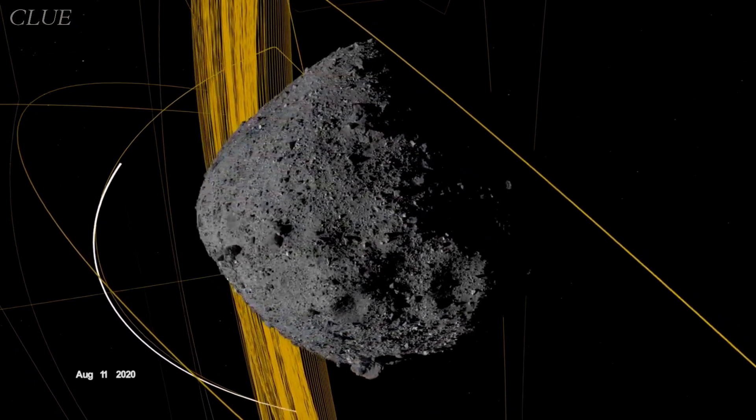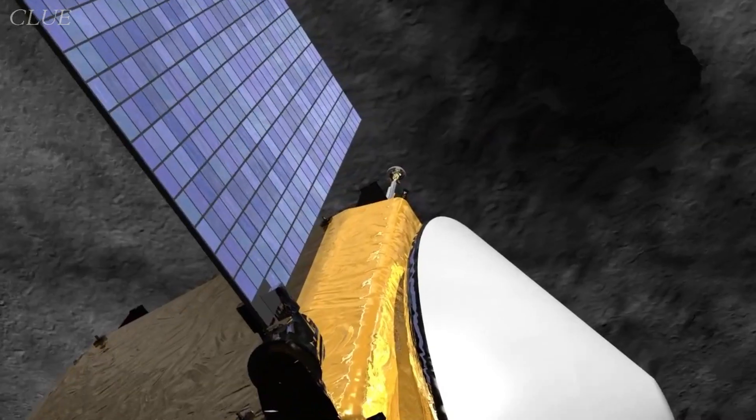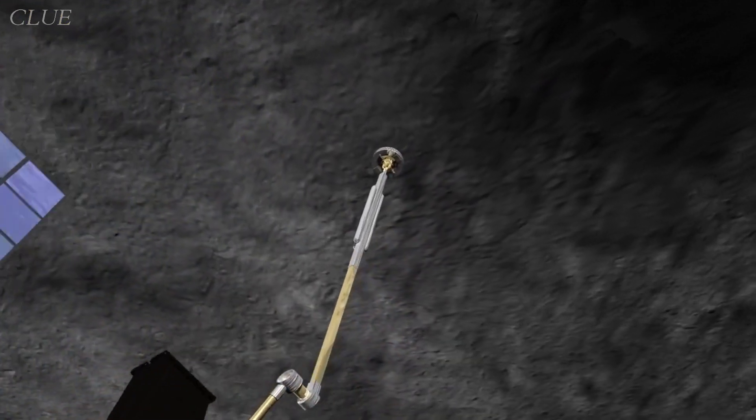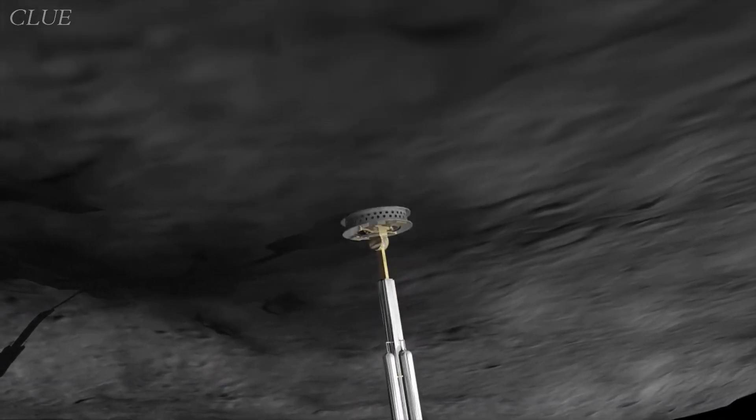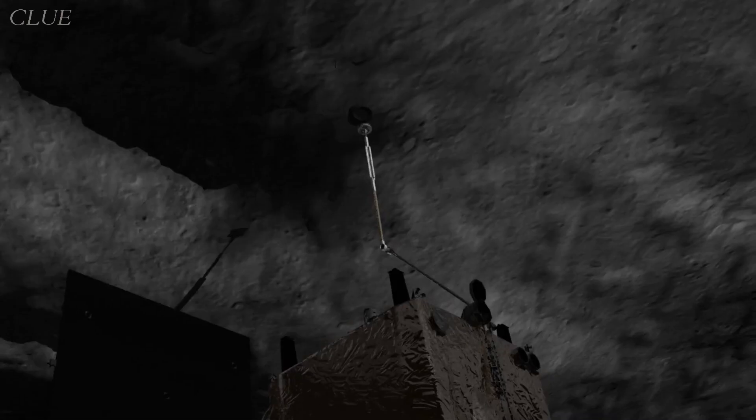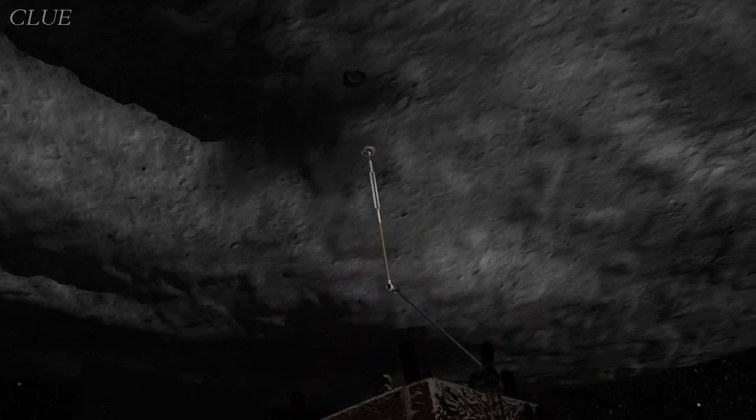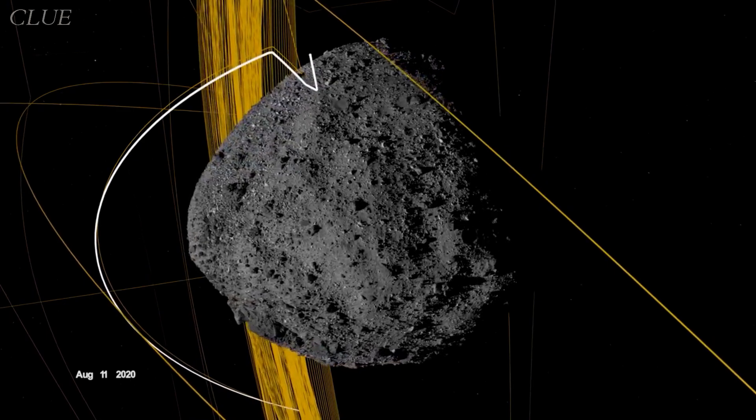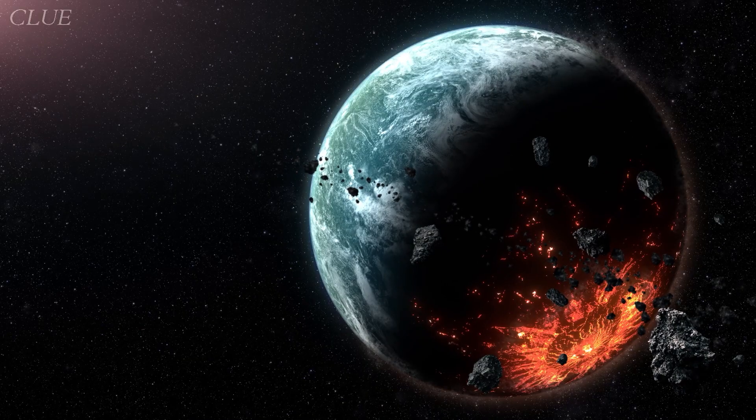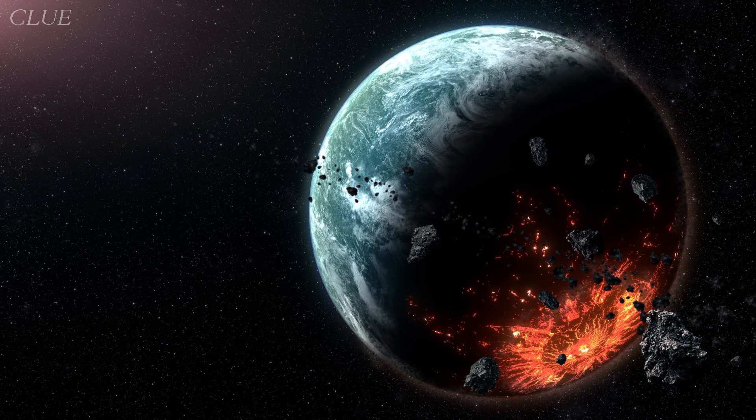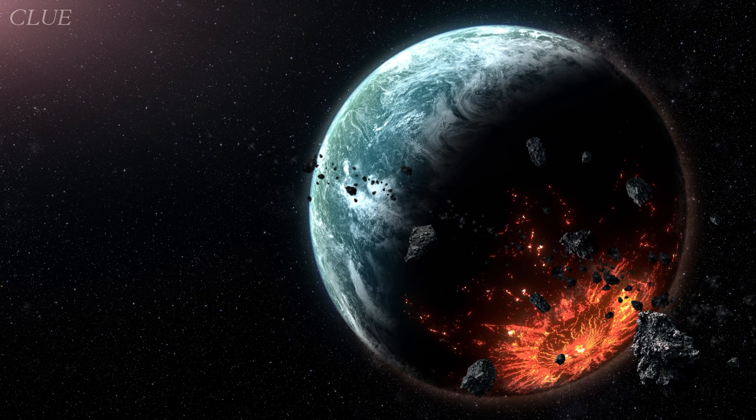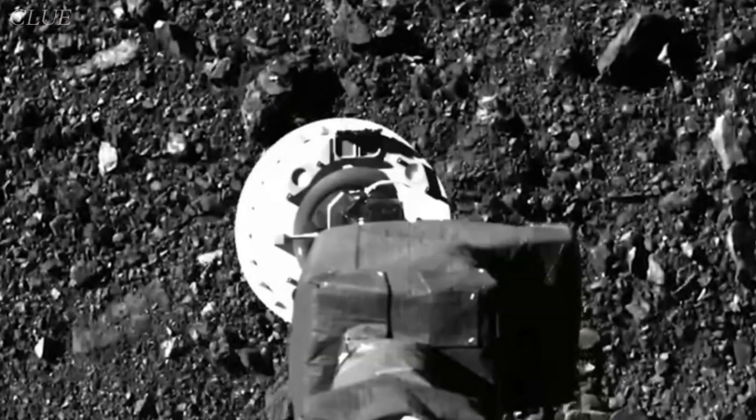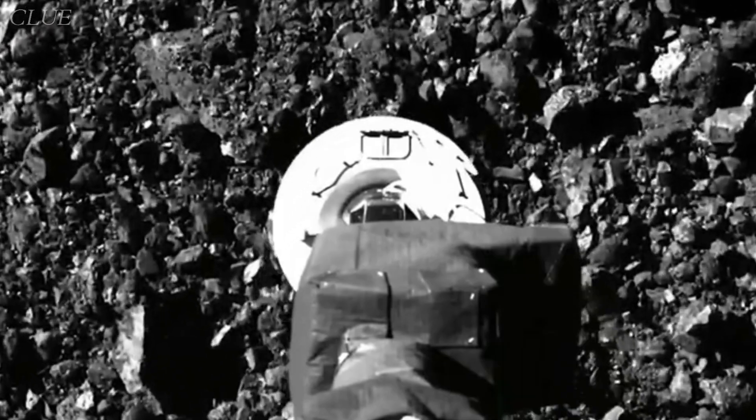As OSIRIS-REx made its descent towards Bennu, the mission's TAGSAM instrument, designed for this very moment, sprang into action as the spacecraft made contact with the asteroid's surface. To keep things under control, a five-second timer was set to ensure the collection time was just right and reduce the risk of any unexpected cosmic collisions. With unmatched precision, OSIRIS-REx touched down within 92 centimeters of its intended target location.